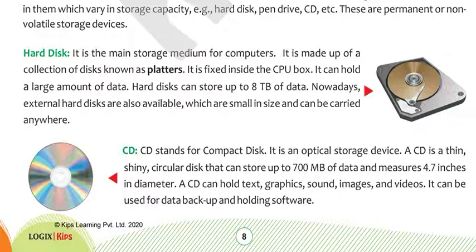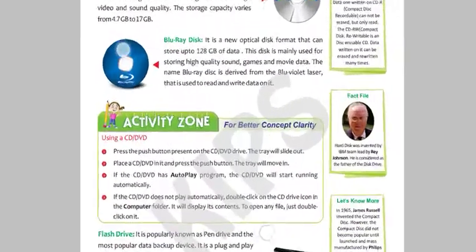A CD can hold text, graphics, sound, image, and video. So a compact disk can store written documents, graphics, music, photos, and videos including movies. It can be used for data backup and holding software. Basically, you can store important files on a CD so that if your computer has a problem in the future, you can take a backup of your data using this CD.